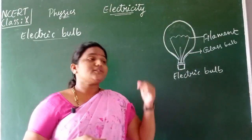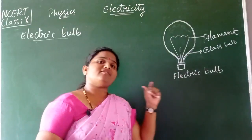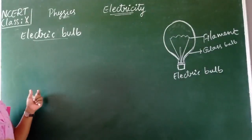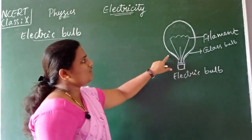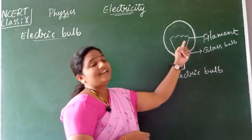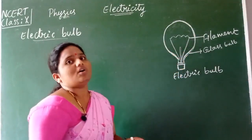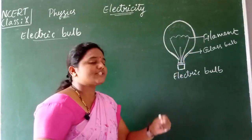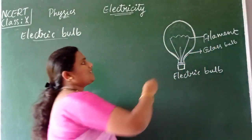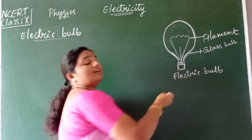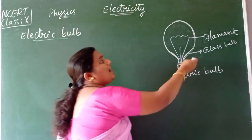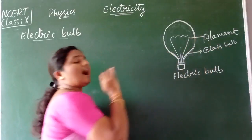Let us first discuss the electric bulb. The heating effect is used in the working of an electric bulb. When we look into the electric bulb, it consists of a thin wire at the center called the filament, and surrounding it is a glass material — we call it the glass bulb.